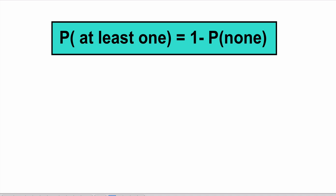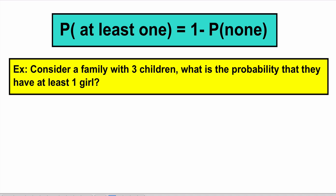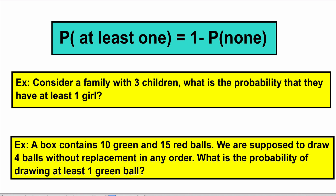First, consider a family with three children — we want to find out the probability that they have at least one girl. Also consider a box that contains 10 green and 15 red balls, and we're supposed to draw four balls without replacement in any order. What's the probability of drawing at least one green ball?